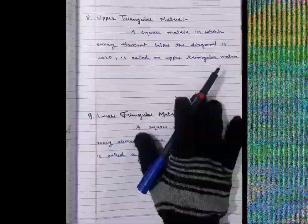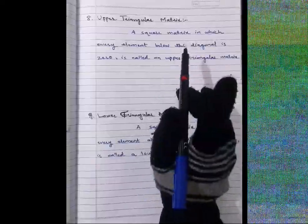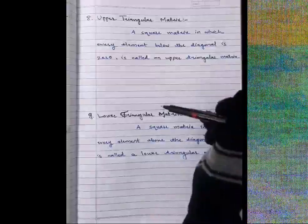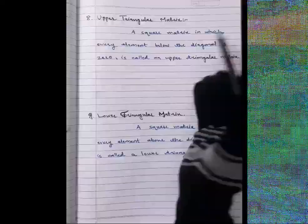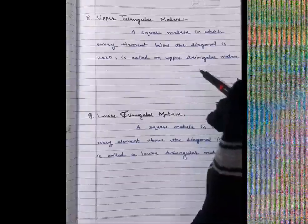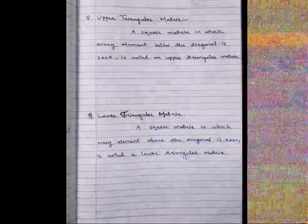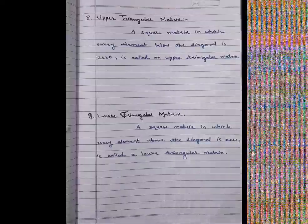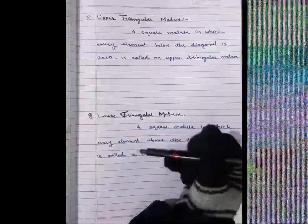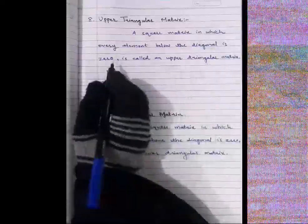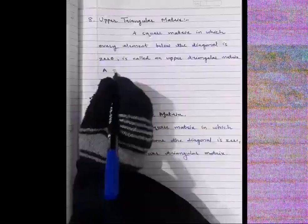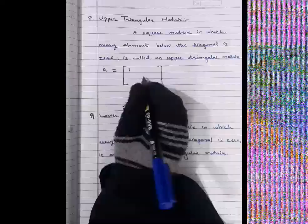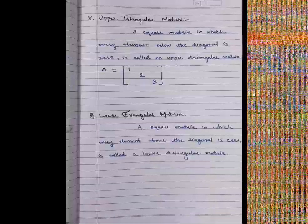There are two conditions. First, it must be a square matrix (equal number of rows and columns). Second, every element below the diagonal must be zero. By example: write diagonal elements 1, 2, 3. This is our diagonal. Below the diagonal, all three elements must be zero.